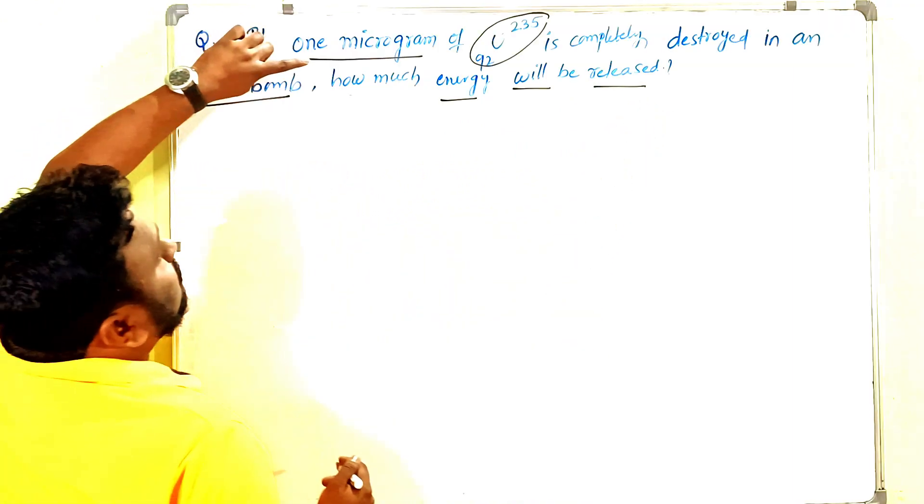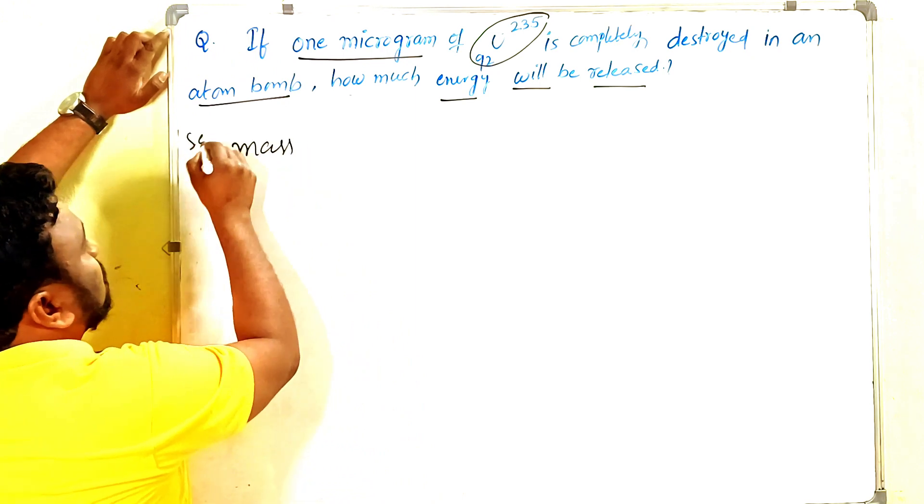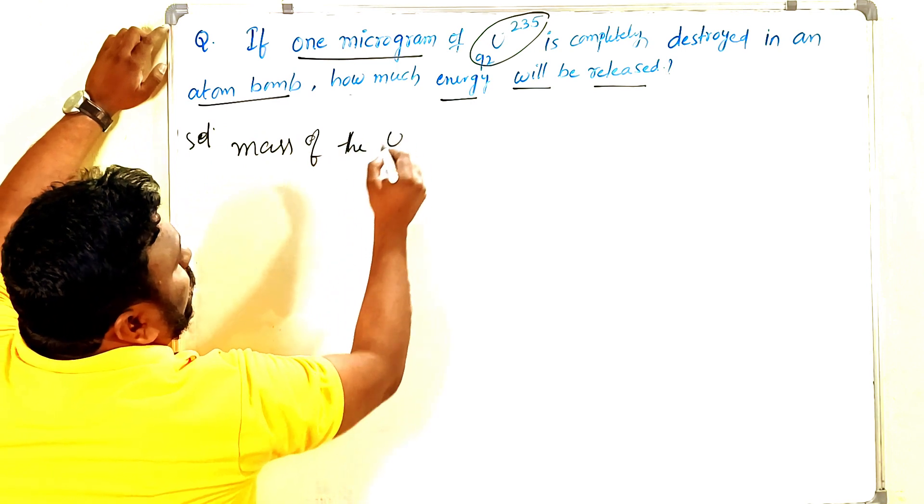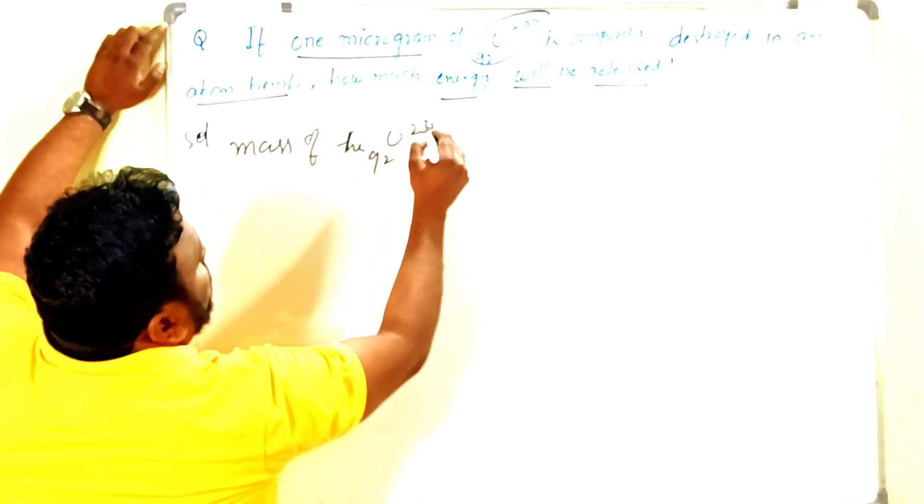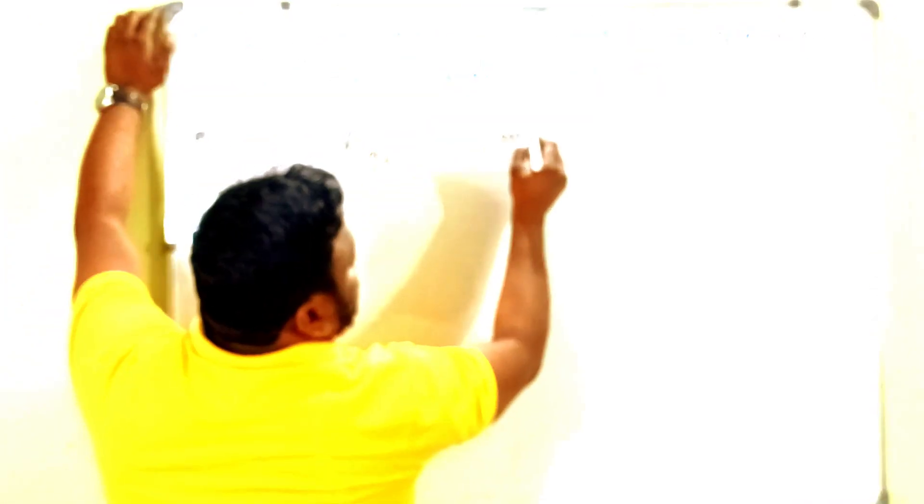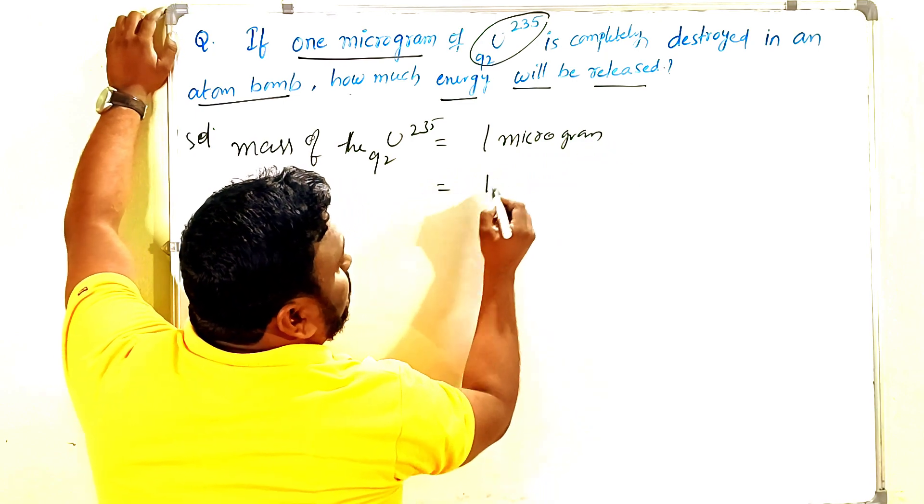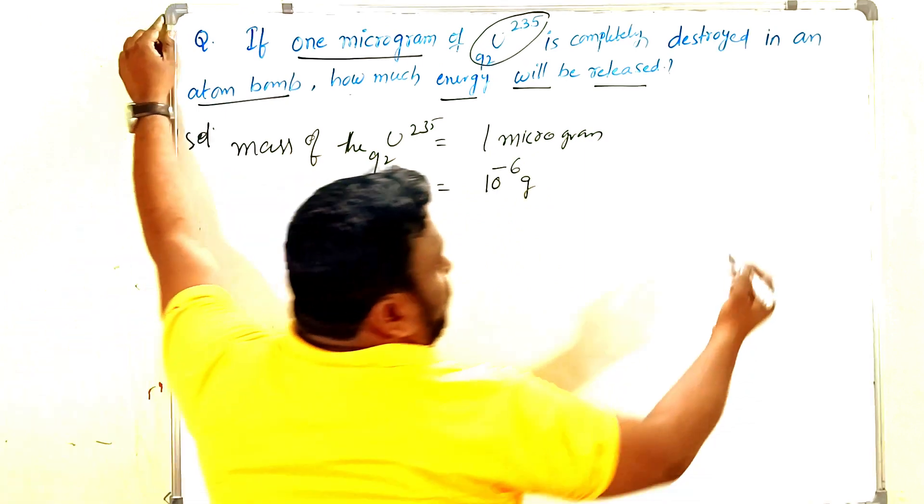So how much mass is there? Mass given is mass of uranium-92-235, how much given? One microgram. So here the value is one microgram, so uranium is 10 power of minus 6 grams.